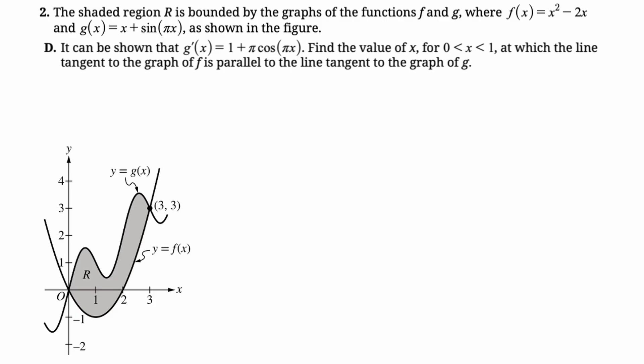Let's take a look at the next part. It can be shown that g'(x) = 1 + π cos(πx). They do that because not everyone has a calculator that can find derivatives, and so you don't want to put anybody at a disadvantage. Find the value of x between 0 and 1 at which the line tangent to the graph of f is parallel to the line tangent to the graph of g. So the slope of the tangent is the value of the derivative. So what we're trying to do here is we're trying to solve g'(x) = f'(x). They didn't give you f', but that's just the power rule. And also this is a calculator question, so you don't even really need to find it. But it would be 2x - 2.